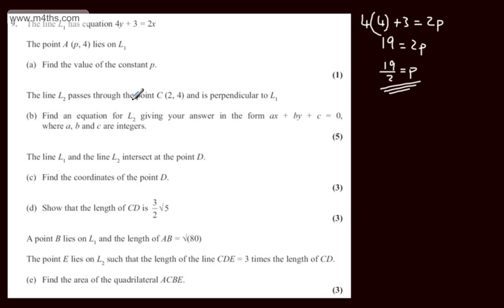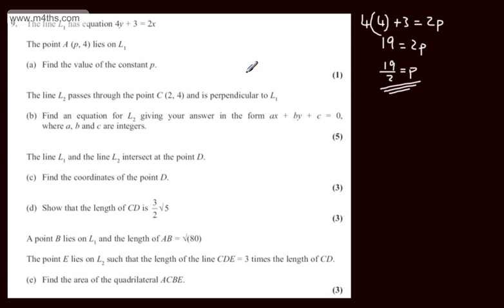We're now told the line L2 passes through the point C and is perpendicular to L1. In part B, we're asked to find an equation for L2, given in the form Ax plus By plus C equals 0, where A, B and C are integers. The question carries five marks. For the equation of a straight line, we need two things: a point it passes through, which we have, and a gradient. Since L2 is perpendicular to L1, we can find the gradient of L2.